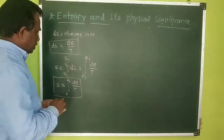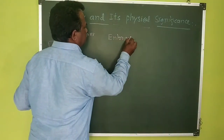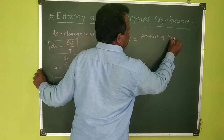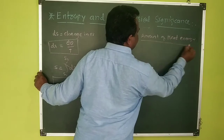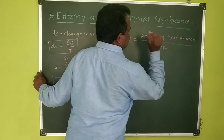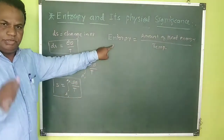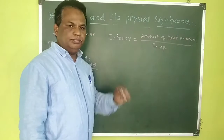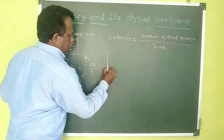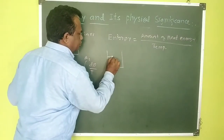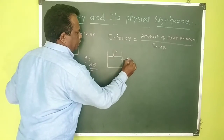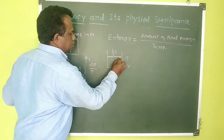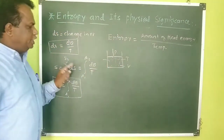So now we can define entropy: entropy is nothing but the amount of heat energy relative to the temperature. Entropy is the ratio of the amount of heat energy to the temperature of the system. If we consider a system with pressure P and temperature T containing gas molecules with internal heat energy, the concept becomes clearer.